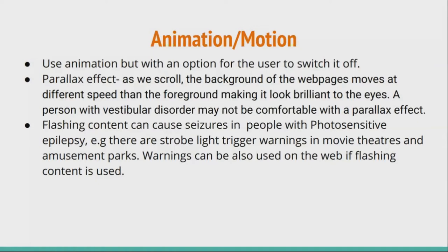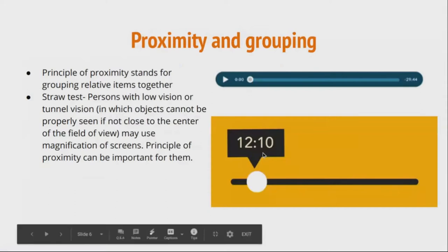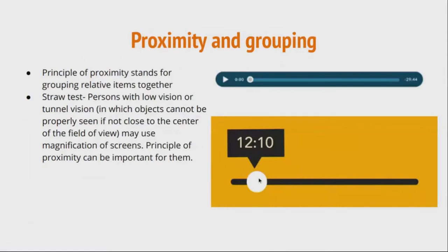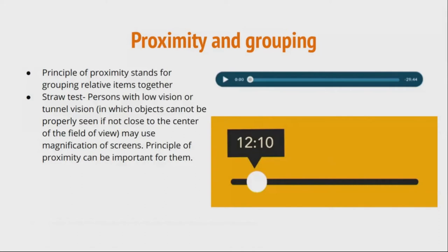In terms of proximity and grouping: if there's a video with a timestamp at the bottom, make sure the timestamp is near the button and not somewhere in a corner. Some people need focus indicators to see the content. In the yellow image example, you can see the timestamp along with where you are. But if the timestamp and the slider are not close to each other, someone with tunnel vision might not be able to access it properly.